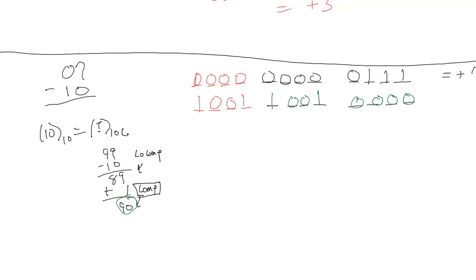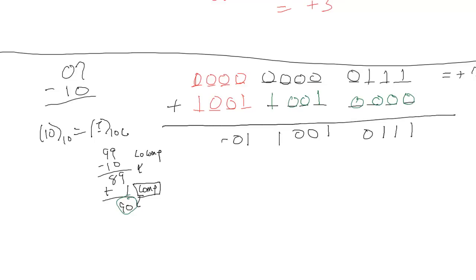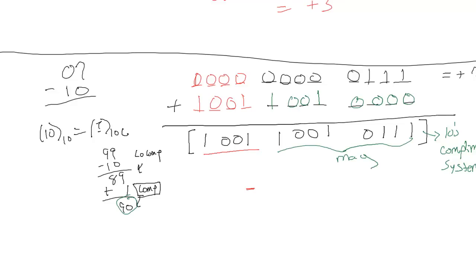Adding the two together: 0000 0111 plus 1001 1001 0000 gives a result with no carryover bits this time. We get 1001 1010 0111. We must remember this is still in 10's complement form. The flag field indicates the answer is negative and in complement form, so we need to take the complement of the magnitude.